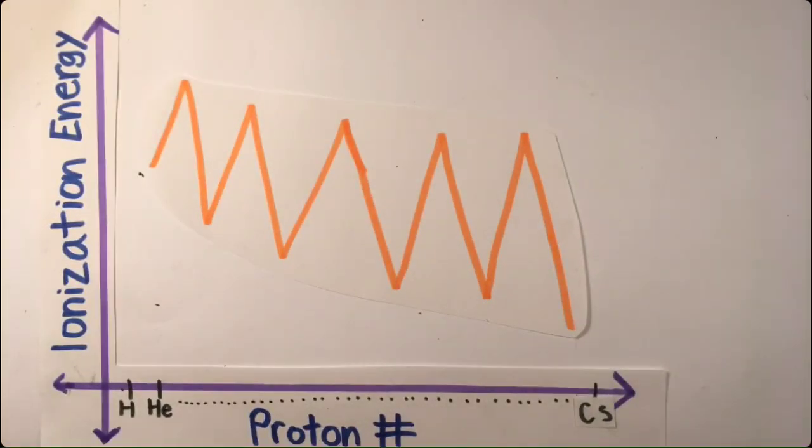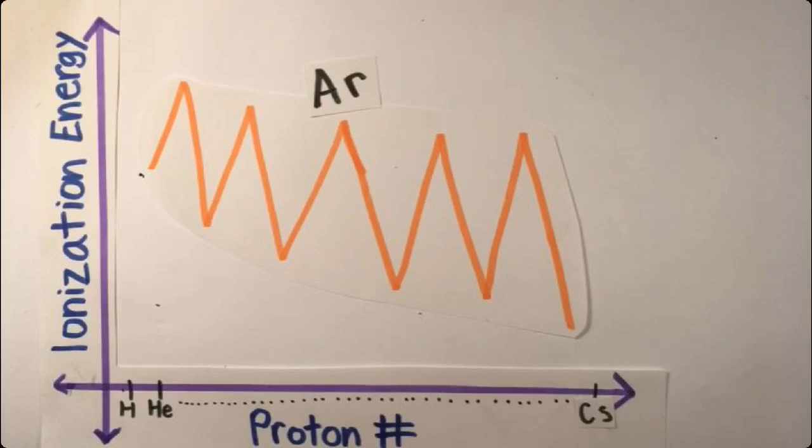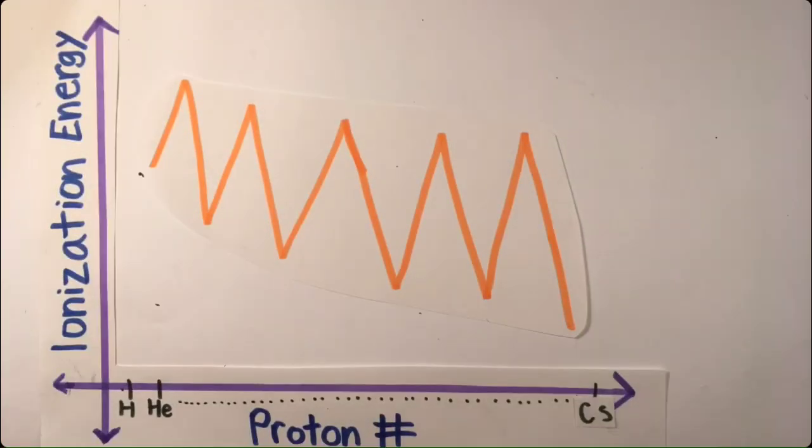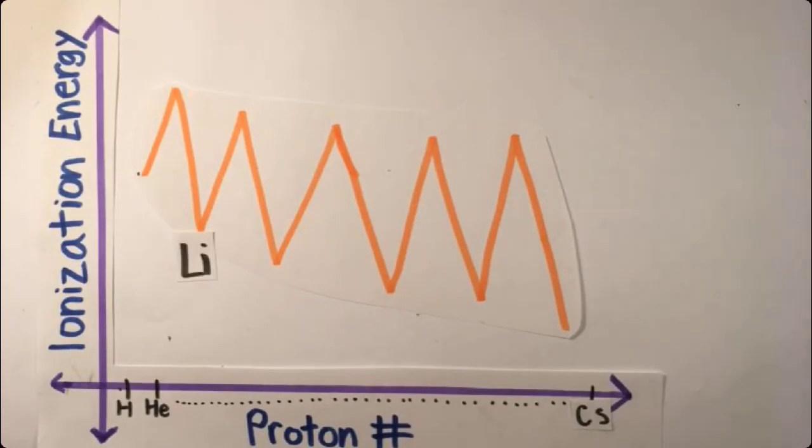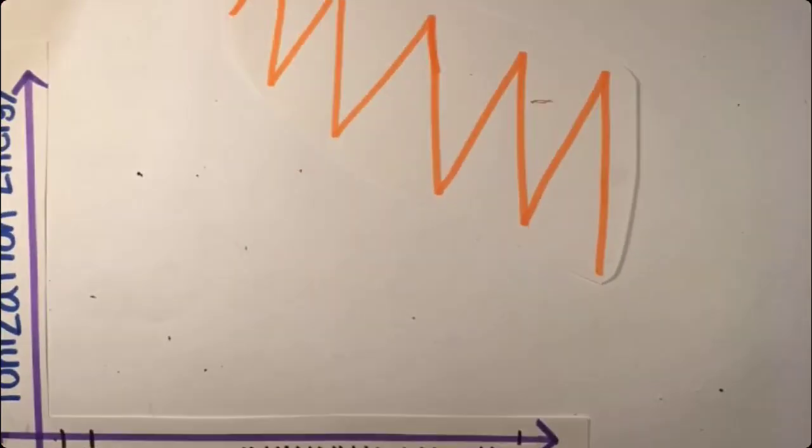As we move from left to right across the periodic table, the energy steadily increases to the noble gases, who already have eight valence electrons and are therefore stable. Then, the energy drops down to the alkali metals, who are desperate to get rid of their one valence electron. This pattern continues down the rows.